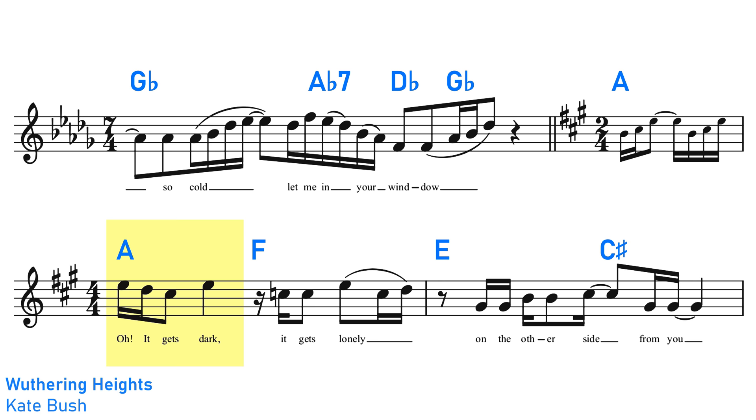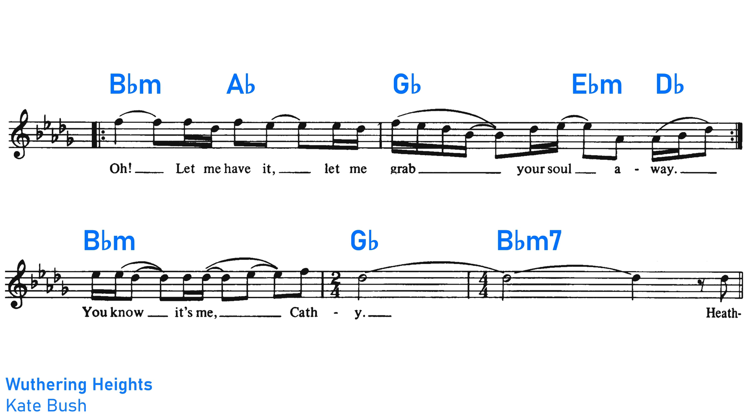Then after the second chorus we get a bridge. The bridge has a fairly conventional chord progression, we're in the same key as the chorus B-flat minor, so we have the one chord, the seven, the six, the four, and the three. After a couple runs around that we get this extra little bit, which like various other moments in the song briefly changes the meter away from 4-4.